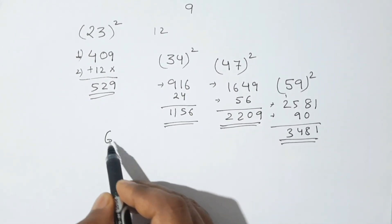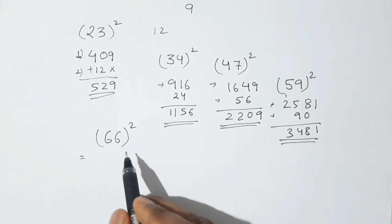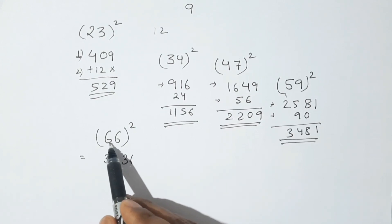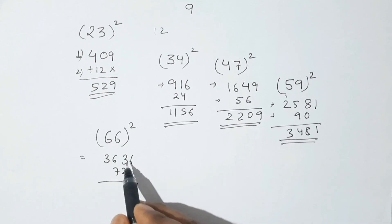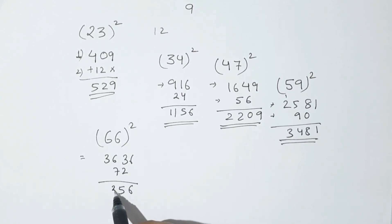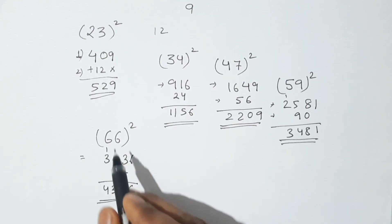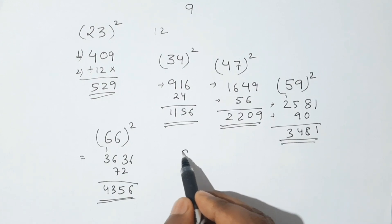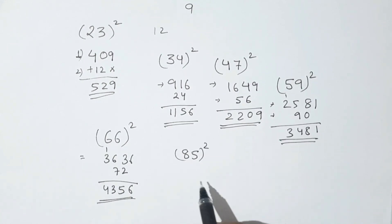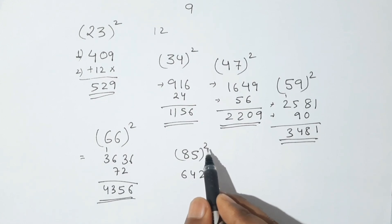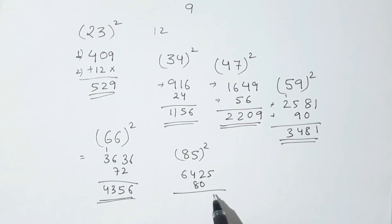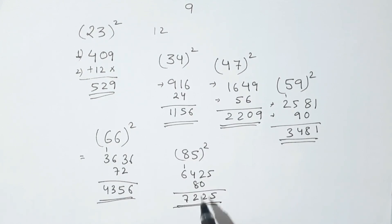Let's take 66 square. First step: 6 square is 36 and 6 square is also 36. Second step: 6 sixes are 36, 36 into 2 is 72. Adding: 6, 3 plus 2 is 5, 7 plus 6 is 13 — carry 1 — 3 plus 1 is 4. That gives us the square of 66. Now for 85 square: adding the digits gives 5, 2, then 8 plus 4 is 12 — carry 1 — 6 plus 1 is 7. This is the square of 85, which is 7225.